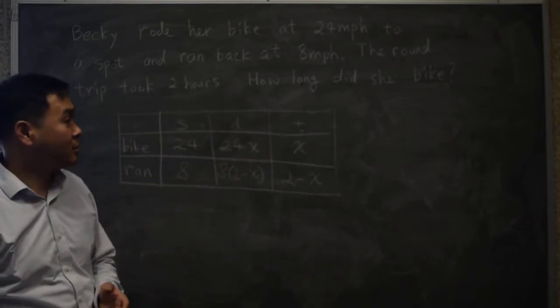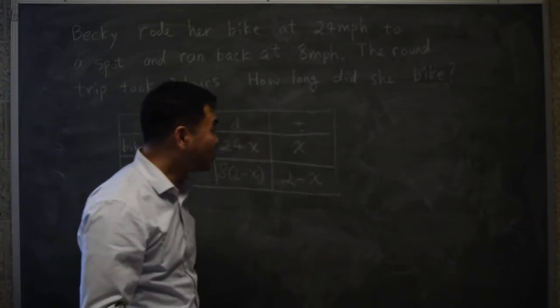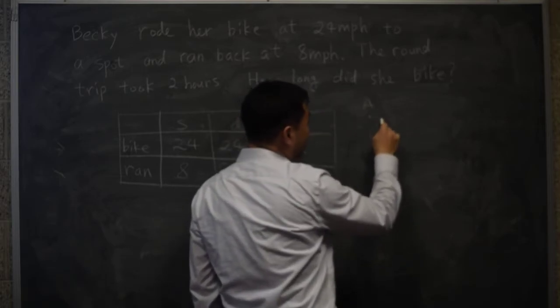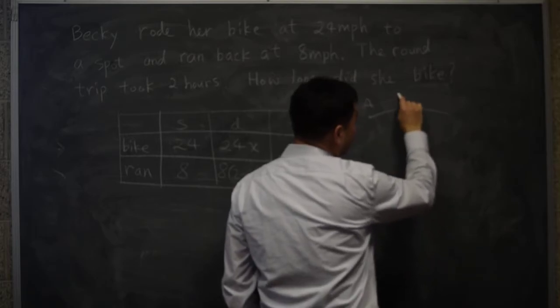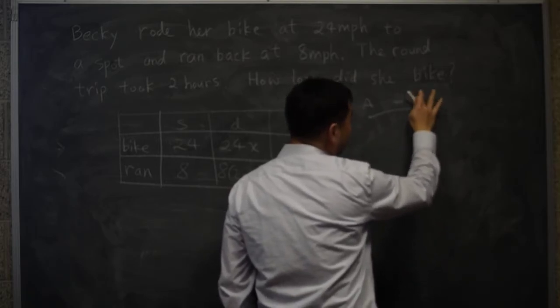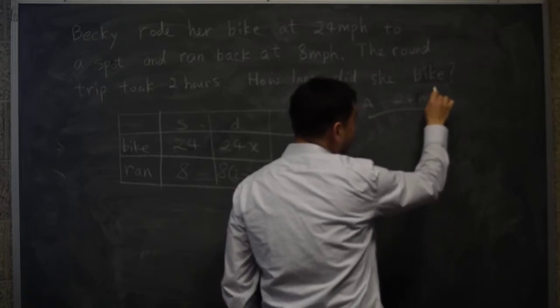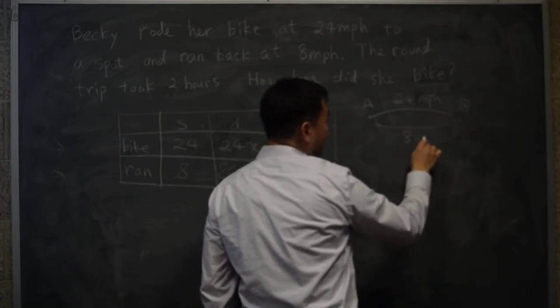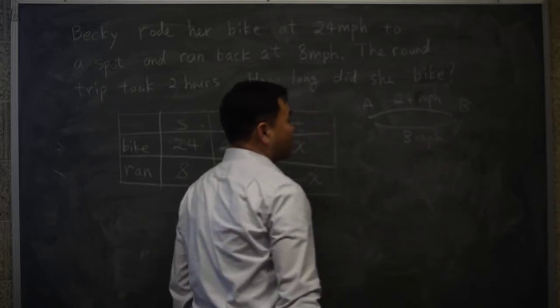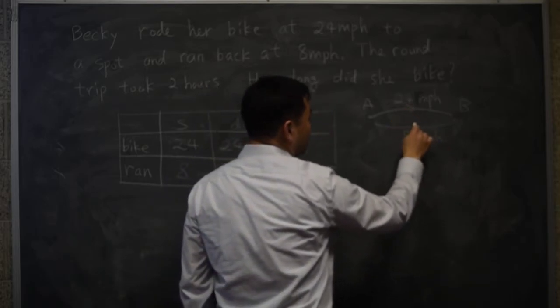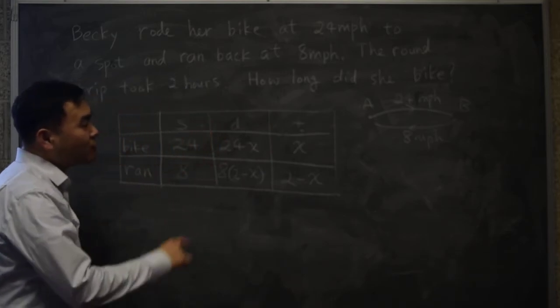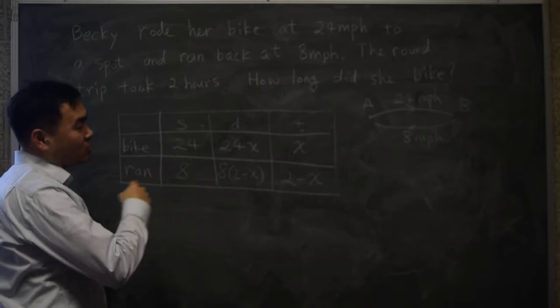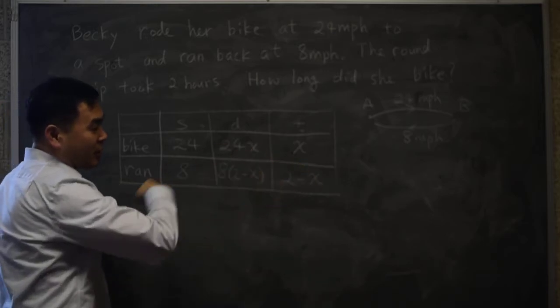So Becky was in spot A, and then she took the bike at 24 miles per hour to spot B, and then she came back at 8 miles per hour.